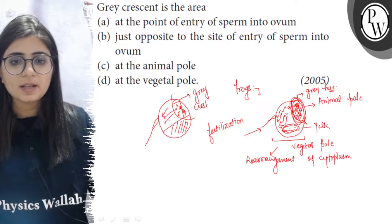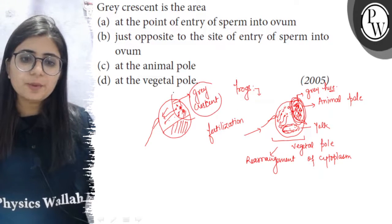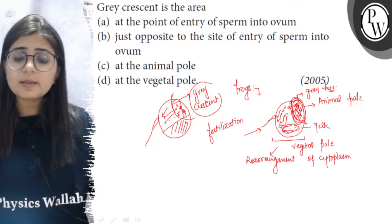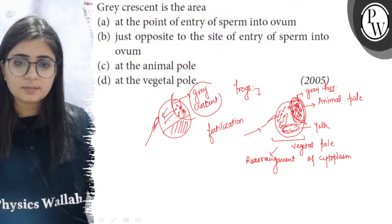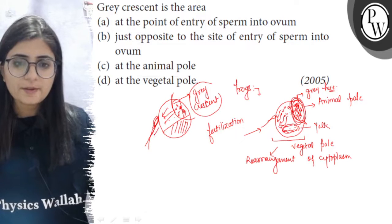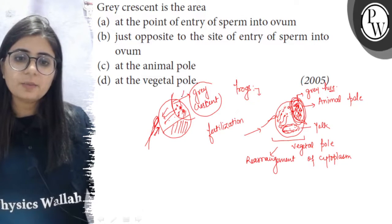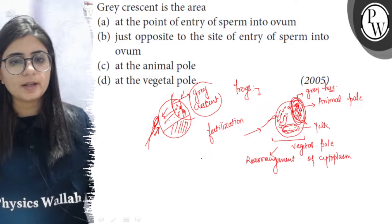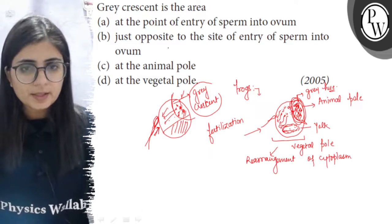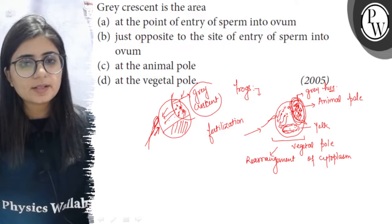This structure where the melanin remains forms what is known as the gray crescent. The gray crescent is formed at the point opposite to the point of sperm entry. The sperm enters the egg from one end, and the gray crescent is formed towards the opposite end.